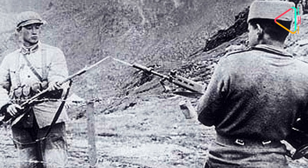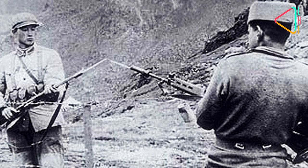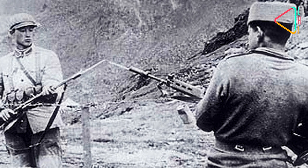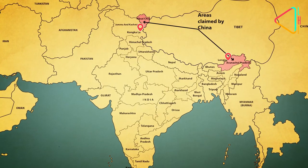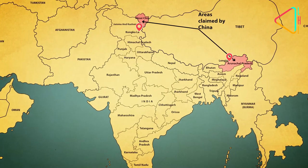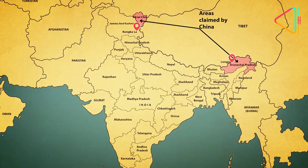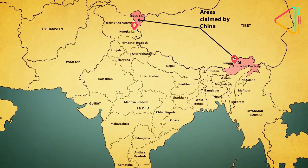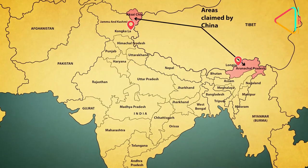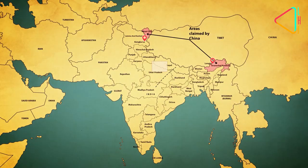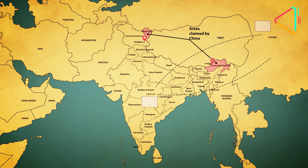Soon after, there were minor clashes between the Chinese and Indian troops patrolling the border. In August 1959, at Longju on the western edge of Nefa, now Arunachal Pradesh, and in October at Kongkala on the Kashmiri-Xinjiang frontier, letters were exchanged between the two governments for negotiations, but the two neighbours could not find a common ground.